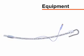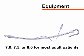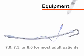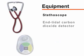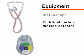Endotracheal tubes are sized according to the internal diameter of the tube. 7.0, 7.5, or 8.0 millimeter tubes are appropriate for most adults. The tubes have a balloon on the distal end that, when inflated, creates a seal between the tube and the tracheal lumen and prevents air leaks and aspiration of gastric contents. You will also need a stethoscope and an end-tidal carbon dioxide detector to assess for proper placement of the endotracheal tube.